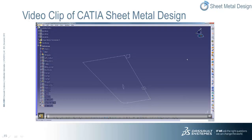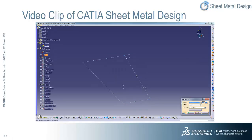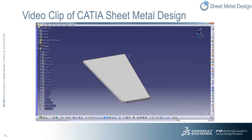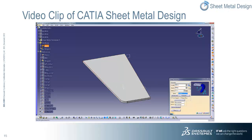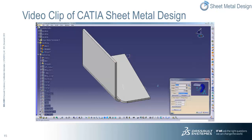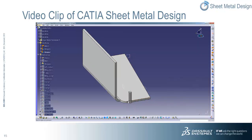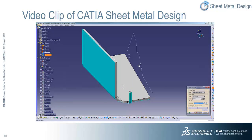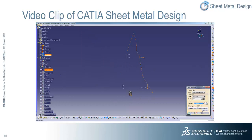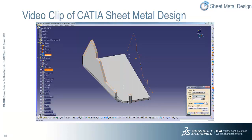We'll start with a profile and do a wall definition for the first wall. We'll then define a flange with a specified length, angle, and bend radius. We then create a second flange and specify the appropriate limits through the use of predefined planes. Next we create a cutout on the flange using a cutout profile to trim the flange and create the desired pattern.